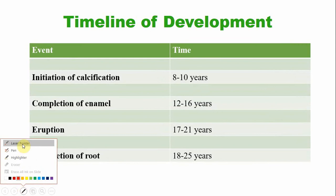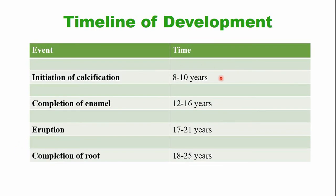The mandibular third molar — calcification of the tooth begins at the age of 8 to 10 years, after birth. The enamel is completed by the age of 12 to 16 years. This tooth erupts into the oral cavity by the age of 17 to 21 years, and the root is completed by the age of 18 to 25 years.